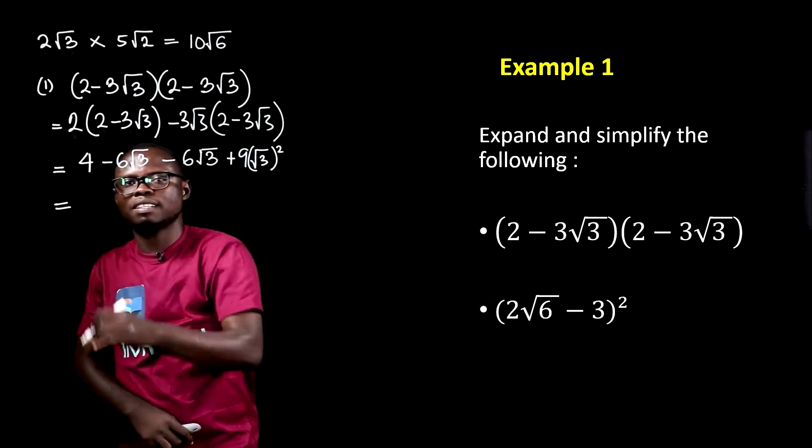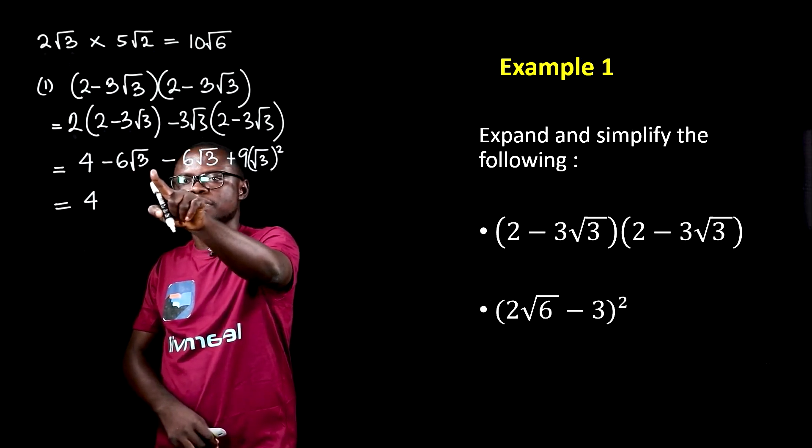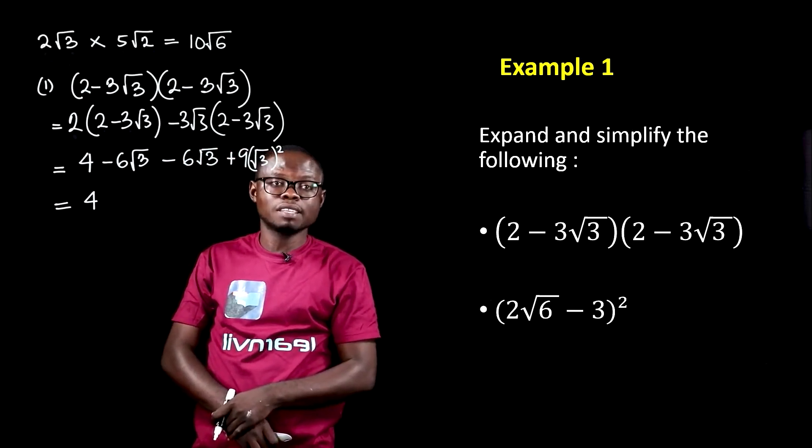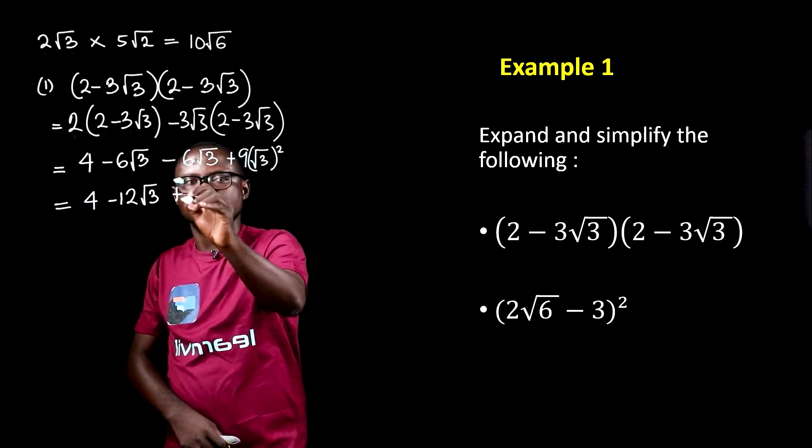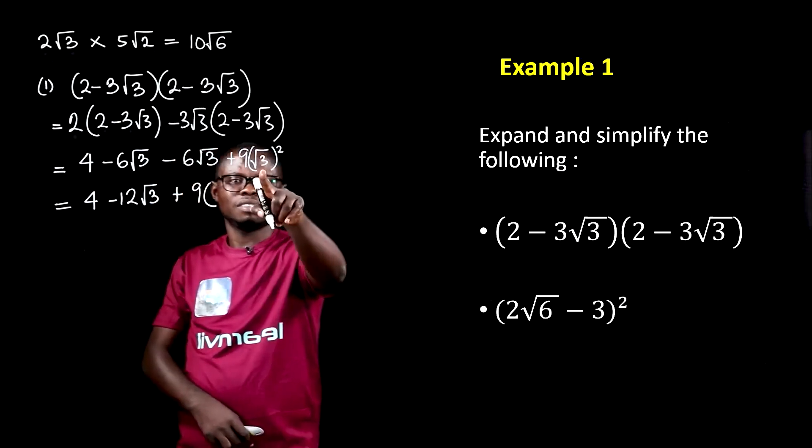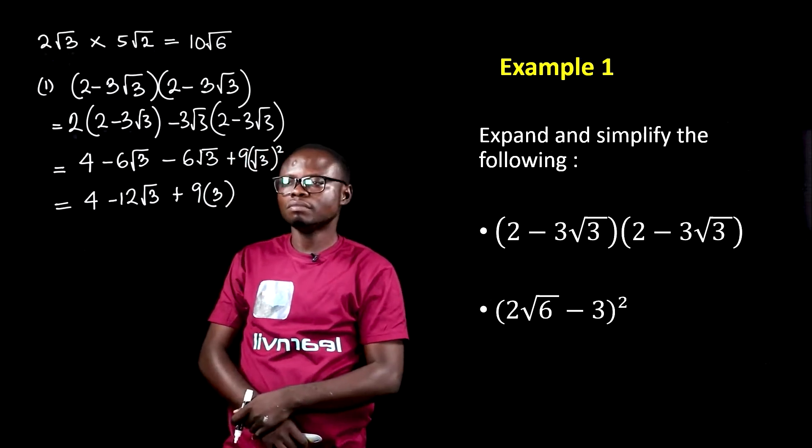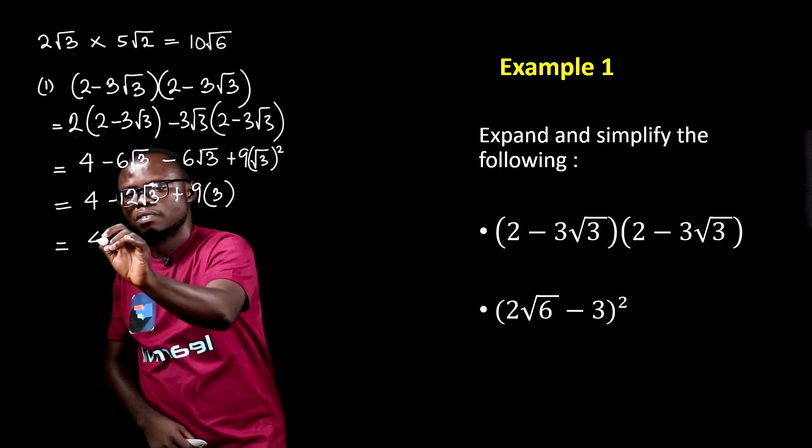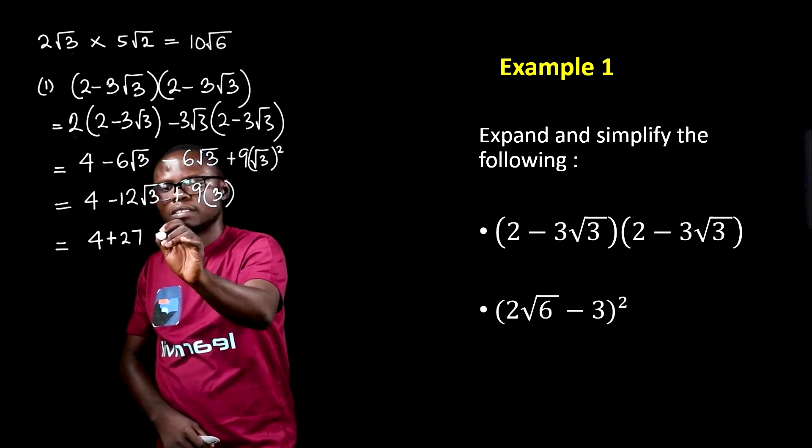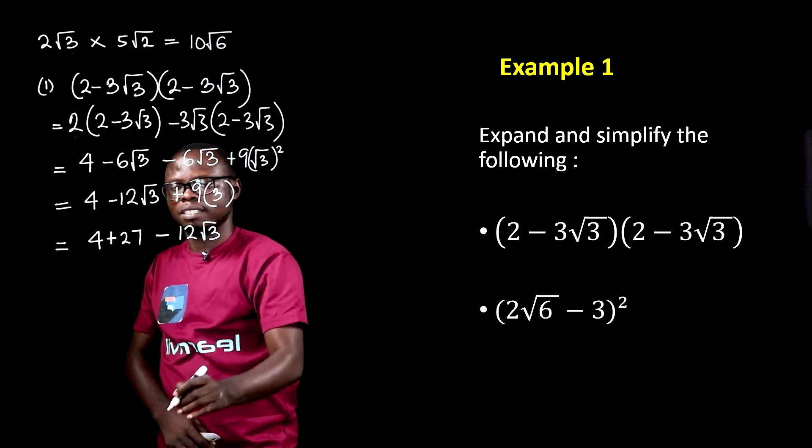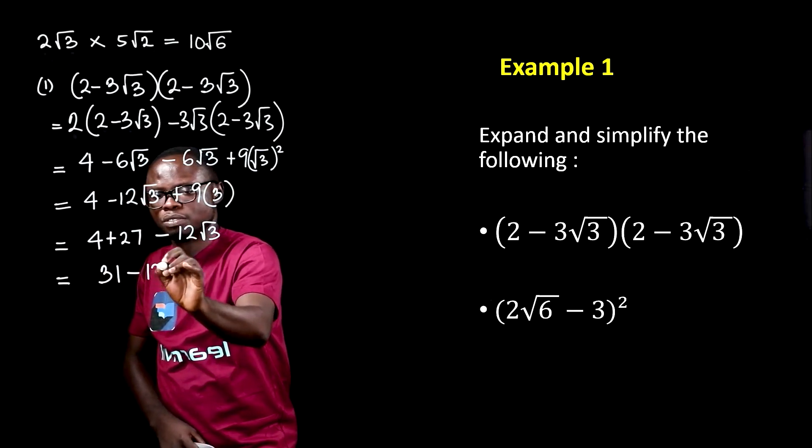We can further simplify this as 4 minus 6 root 3 minus 6 root 3 are like surds, and so we'll have minus 12 root 3. Then plus 9, remember, root 3 squared gives us 3. This becomes 4 plus 9 times 3 is 27, then minus 12 root 3. We get 31 minus 12 root 3.